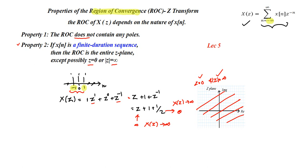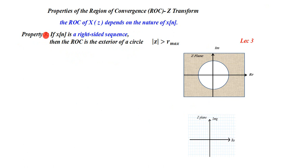Otherwise we can say the ROC is the entire z-plane. Based on the nature of the signal — a finite duration sequence — we can say the ROC will be the entire z-plane except z = 0 and z = infinity, depending on the given signal, without even calculating the z-transform.